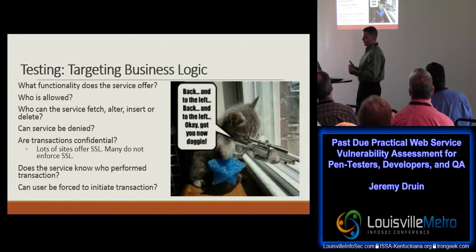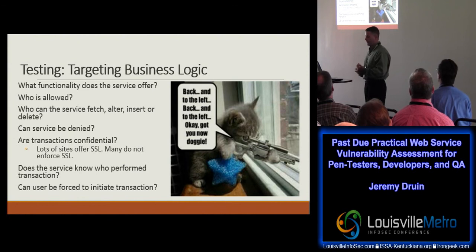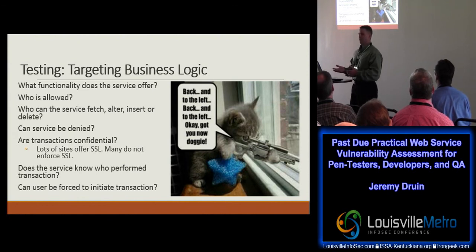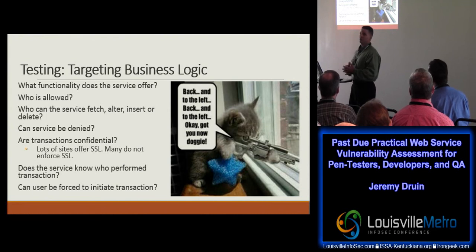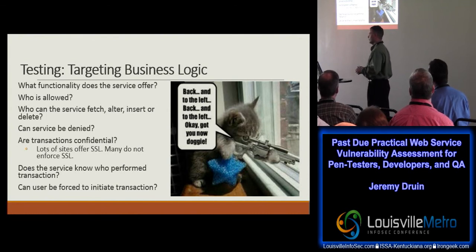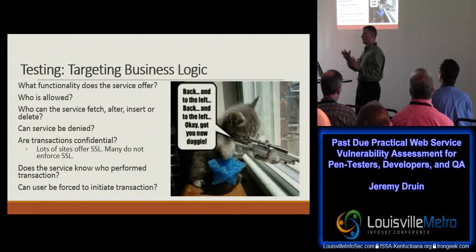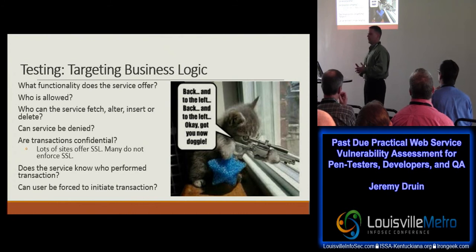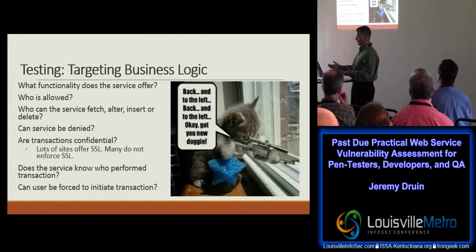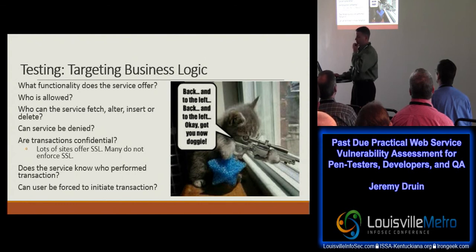Target the business logic: try to fetch, alter, insert, and delete all those different records. Try to bypass authentication or the API key — maybe they use HTTP basic auth. Maybe you can intercept the request and get between the client and the server using a network layer attack, using a packet capture to get a machine-in-the-middle. And cross-site request forgery is just as easy to do on services, if not easier than on a web page.